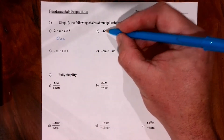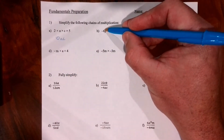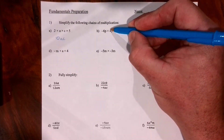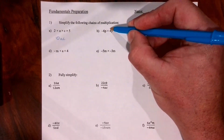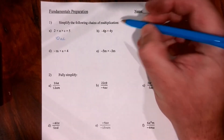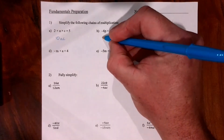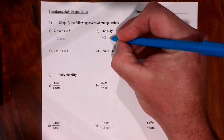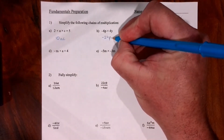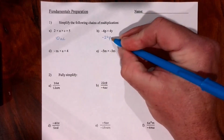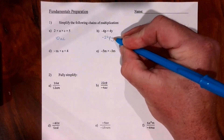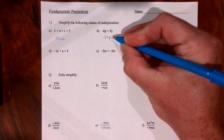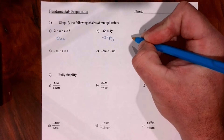Question 1b is negative 6p multiplied by 4y. We multiply the numbers together: minus 6 times 4 makes negative 24. Then we stack the letters beside one another in alphabetical order, remembering there are actually times signs between each.